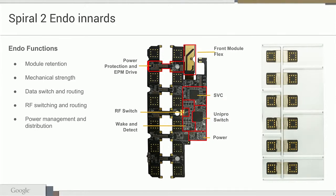That function is decomposed into a couple of requirements. One is module retention — the endo needs to securely hold the modules in place using the ribs that form the slots, and also using electropermanent magnets. The endo also provides mechanical strength to the whole phone, protecting it from being bent too much and cracking the display. The spine is displaced from the neutral plane, providing a lot of mechanical stiffness.